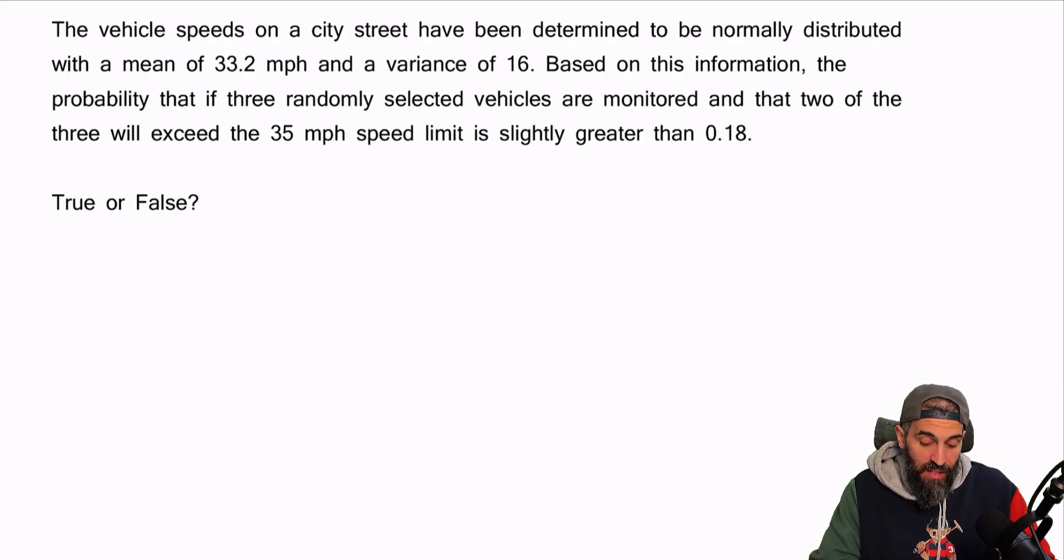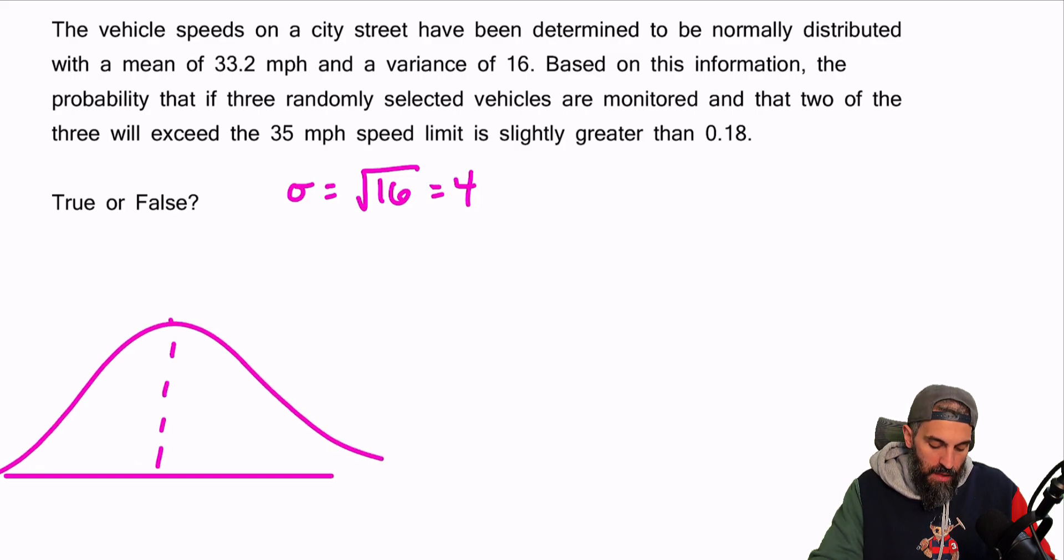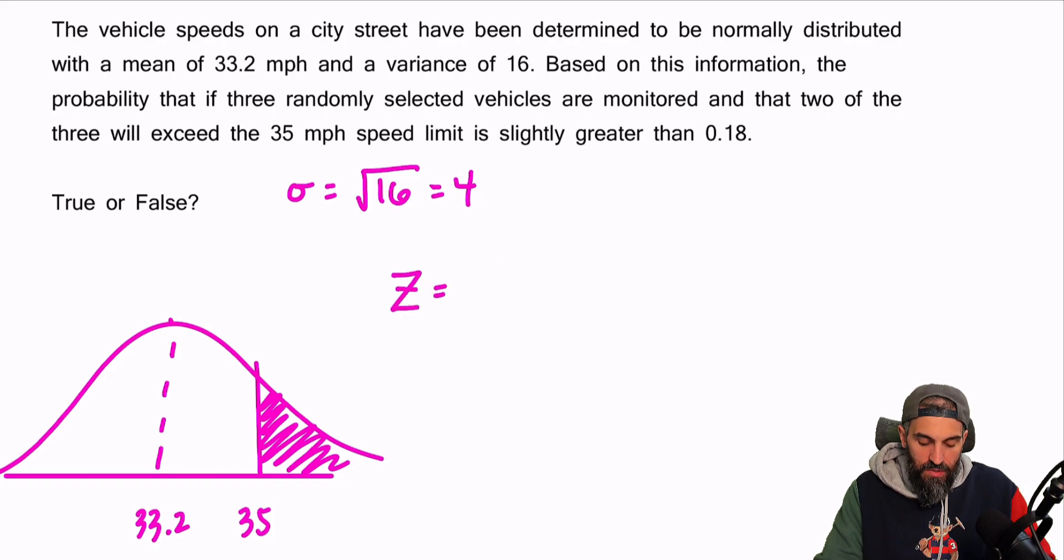Okay, so to solve this question, let's start by finding the probability that a car exceeds 35 miles per hour. So the first thing I'll do is square root the variance to get a standard deviation. So that would be 4. Draw my bell curve. Place the mean in the middle, so 33.2. We're looking for excess of 35. So I'm looking for this area here to the right. So our z-score, 35 minus 33.2 divided by the standard deviation of 4 is 0.45. That is our standardized value.